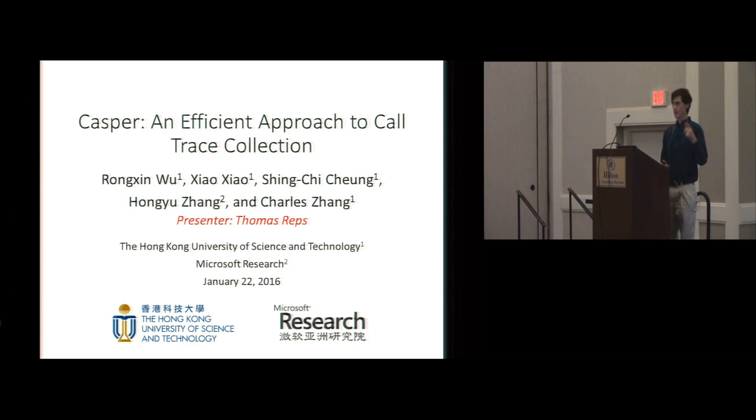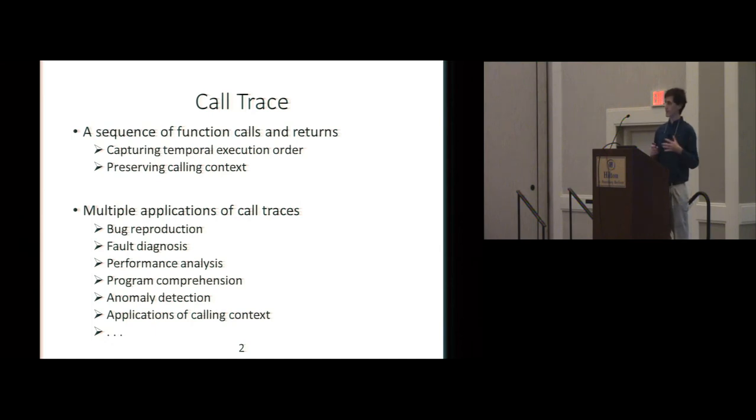So anyway, this paper, unlike the previous paper, this concerns dynamic analysis. Specifically, it's about an efficient method for collecting a call trace for a program. So for them, a call trace, and for all of us, I think, a call trace is the sequence of function calls and returns in a given execution of the program. So we want to get the entire temporal execution order, and we want to have this trace that shows the calling and return sequences. So I'm not going to go through this, there are just many applications of call traces in software engineering and program analysis.